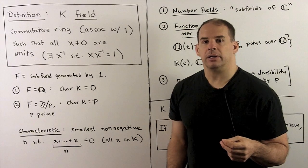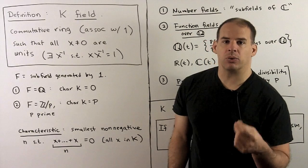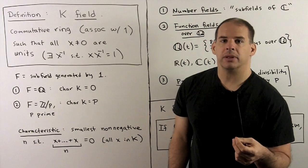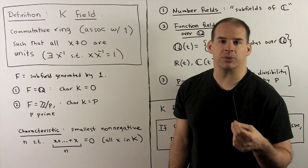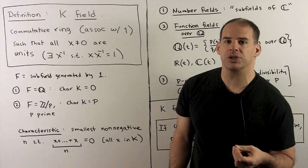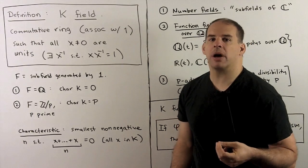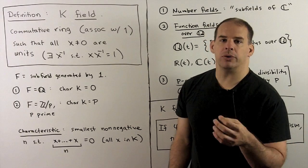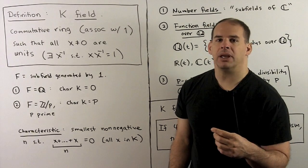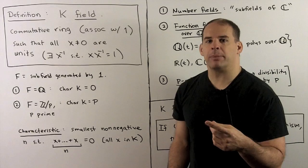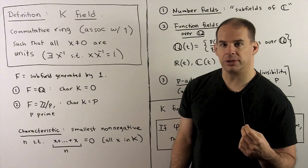Welcome to Field Theory. The prerequisite is basic ring theory — that's the ring theory you find in a first abstract algebra course. For this first part, we'll review the main results for fields from basic ring theory, and we'll give examples to motivate the rest of the course.